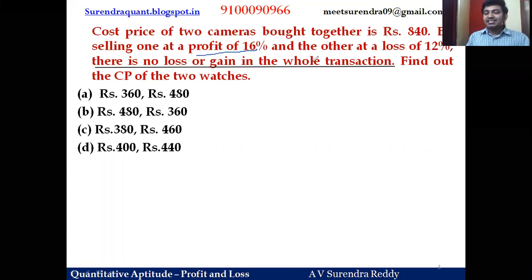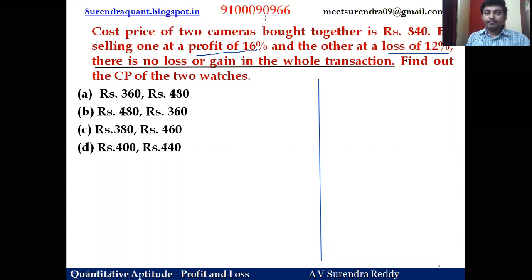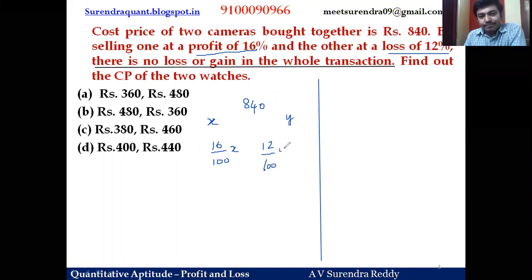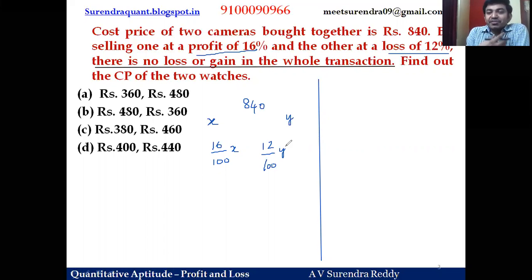The first cost is the one selling at a 16 percent profit; the second is the one selling at a 12 percent loss. Total cost is 840 rupees. Let first cost be x and second be y. If there is no profit no loss on the whole transaction, the profit and loss must be equal — the profit on the first article must be recovered by the loss on the second.